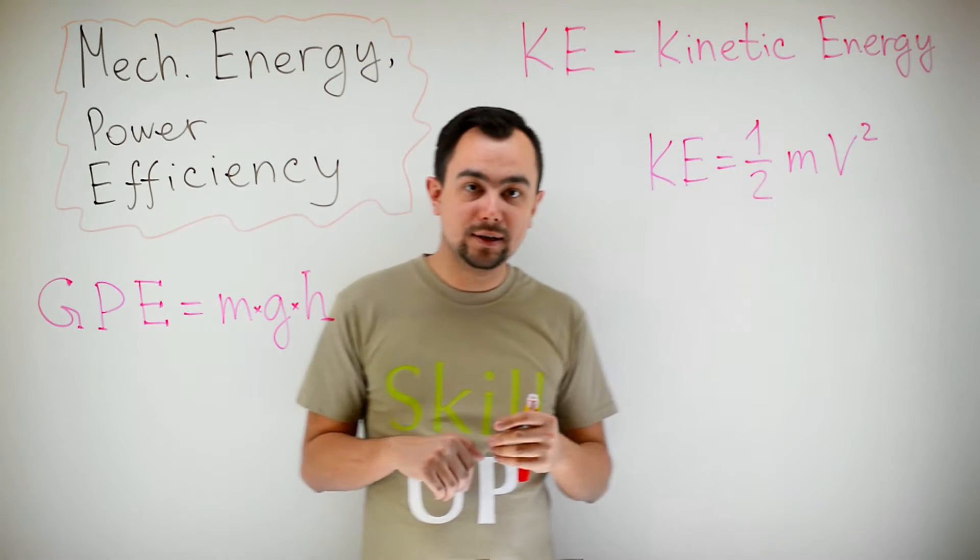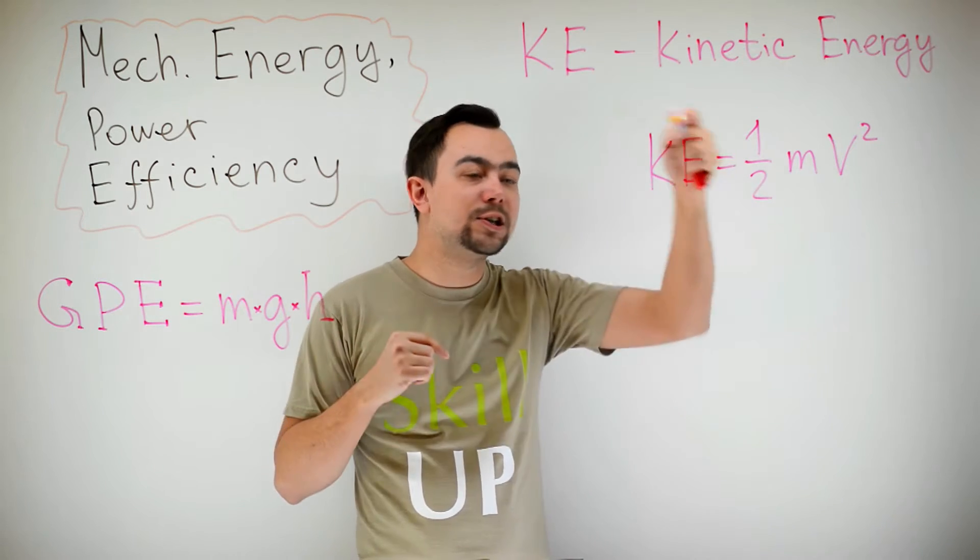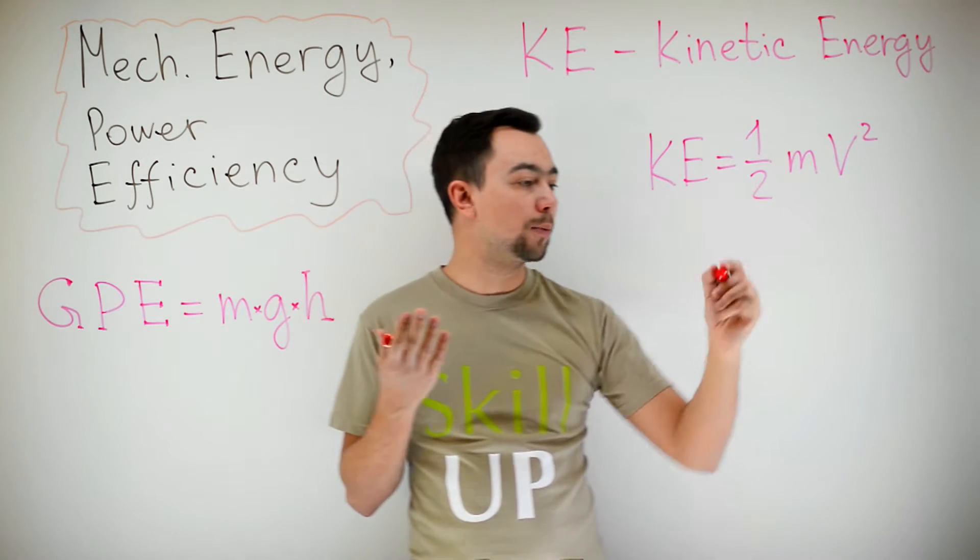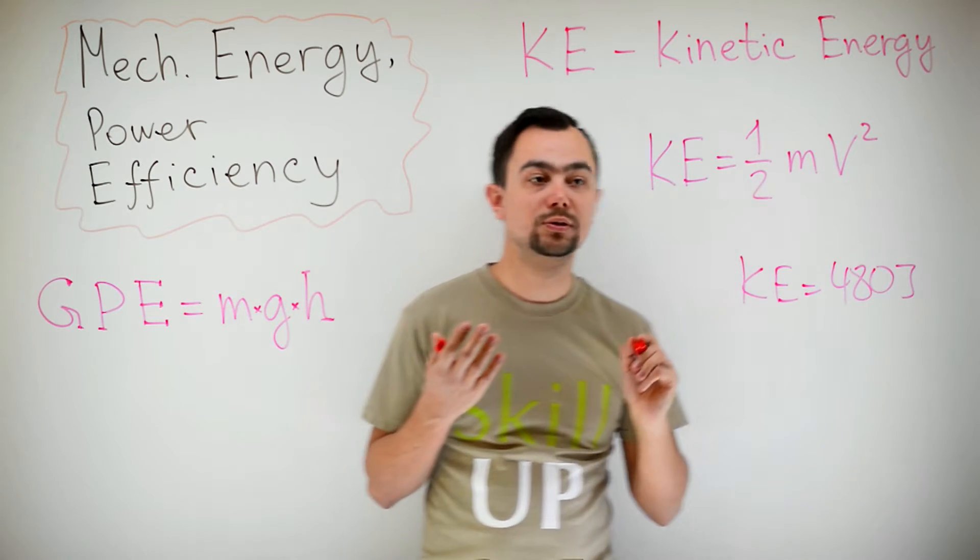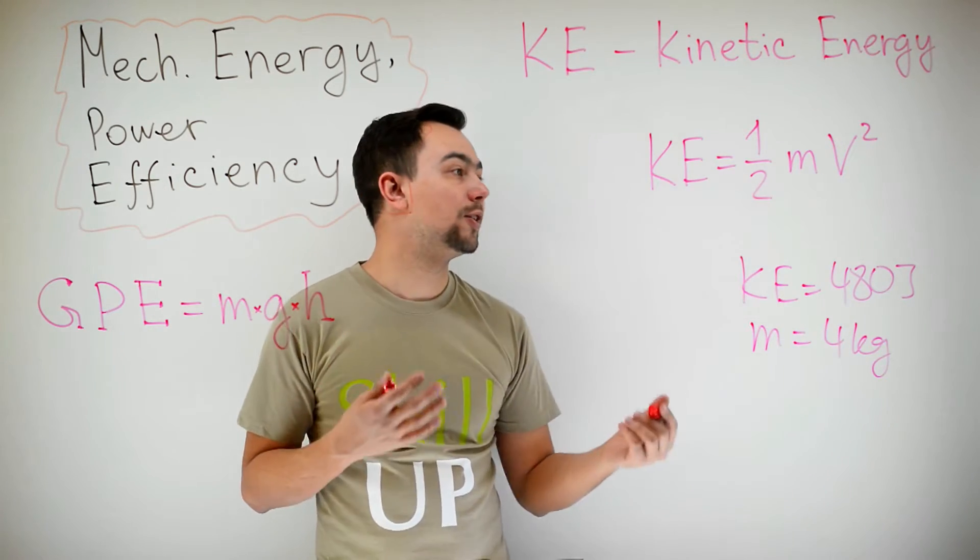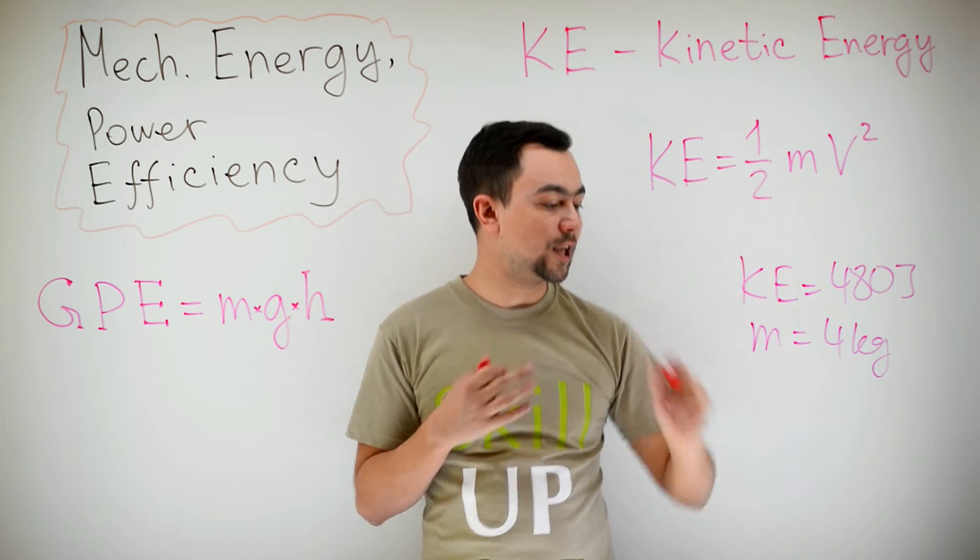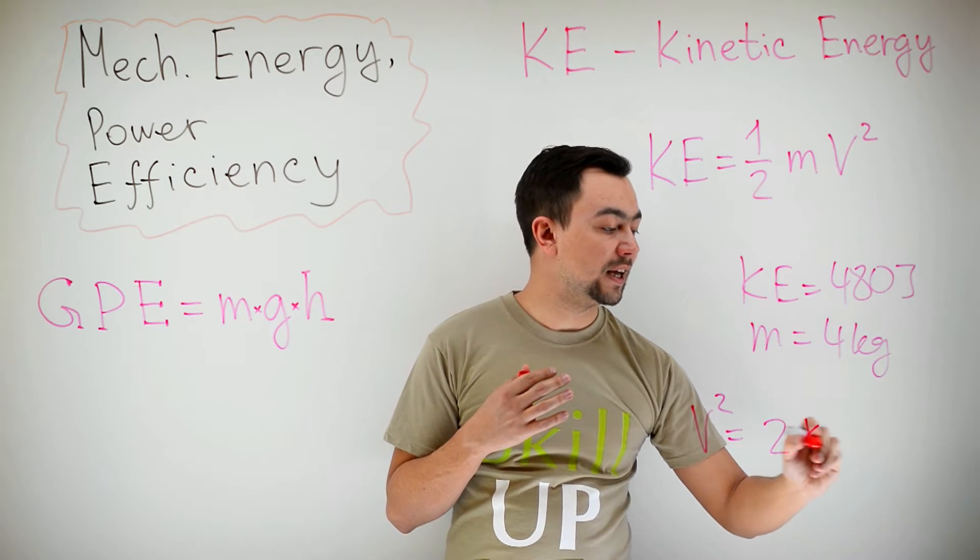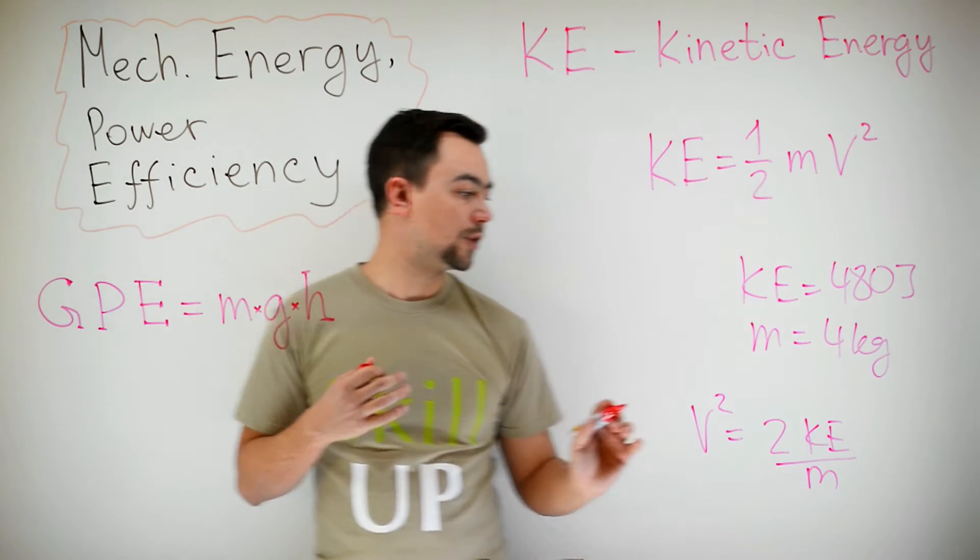So with our brick, the 480 joules of gravitational potential energy has converted into kinetic energy. Knowing the mass, we can calculate the speed. So for our brick, the kinetic energy is 480 joules, mass of the brick was 4 kilograms, and we need to calculate the velocity. So we're rearranging this formula to make v squared the subject. So v squared is equal to 2 times kinetic energy divided by the mass.